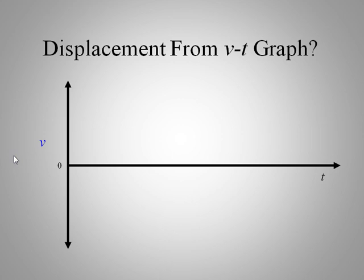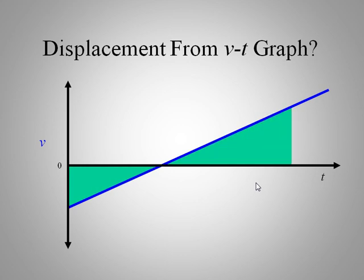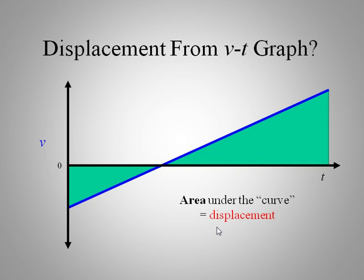Can we get displacement from a velocity-time graph? Here we have a negative velocity at an early time, then the velocity changes and reaches zero — the object briefly stops — then begins moving forward. Displacement equals velocity times time, and on this graph that's represented by the area. The area under the curve gives us displacement. Positive area above the axis is positive displacement; area below is negative. The net displacement is the difference of these two areas.